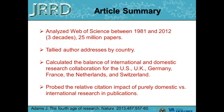Back to the article by Jay Adams. He took a look at Web of Science articles published between 1981 and 2012, comprising 25 million papers, and tallied the author addresses by countries. He then calculated the balance of international and domestic research collaboration for the U.S., U.K., Germany, France, the Netherlands, and Switzerland, and probed the relative citation impact of purely domestic versus international research and publications.